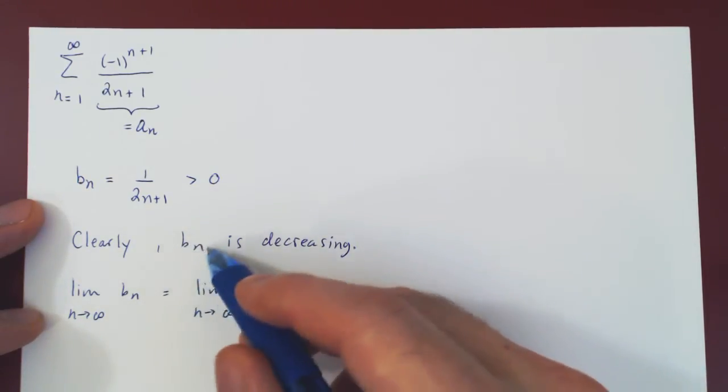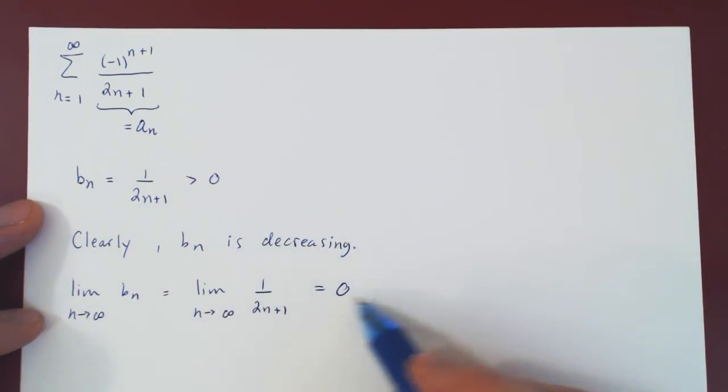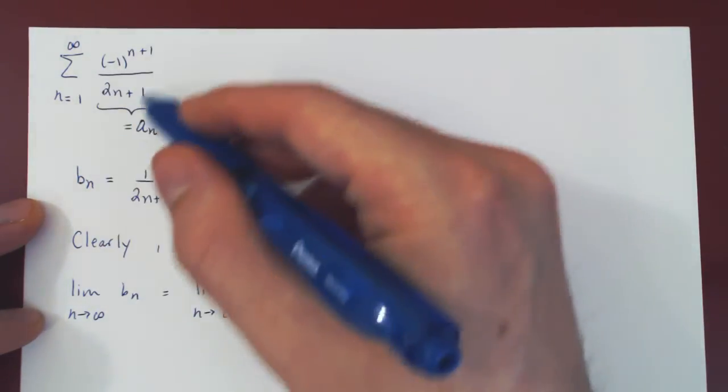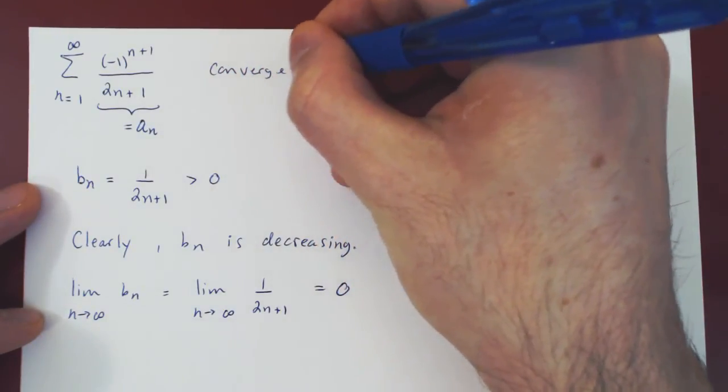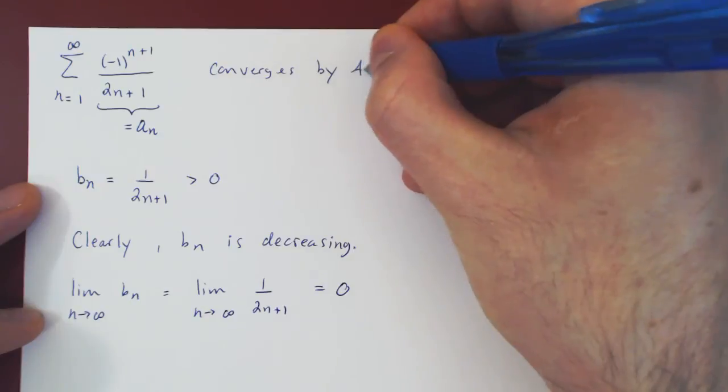So the sequence of positive terms is decreasing and does shrink to 0, so the series converges by the alternating series test.